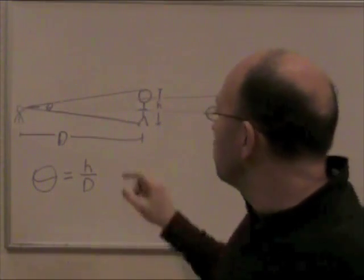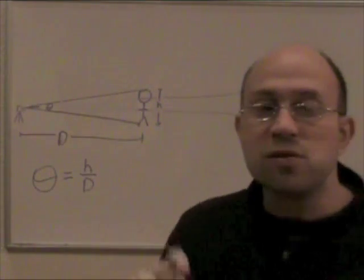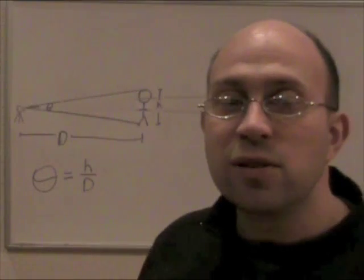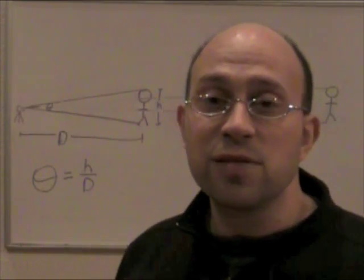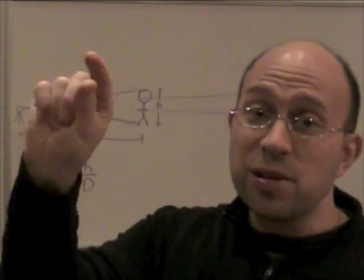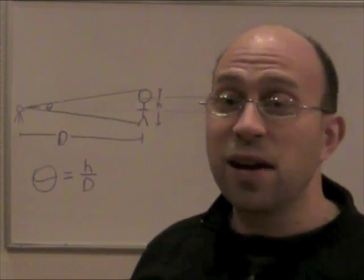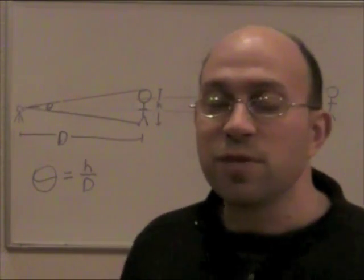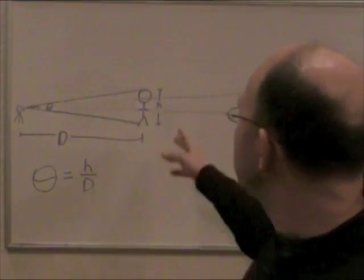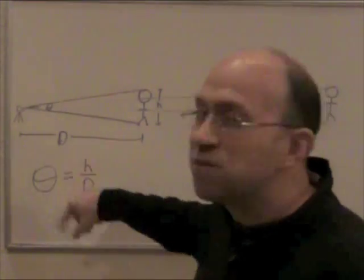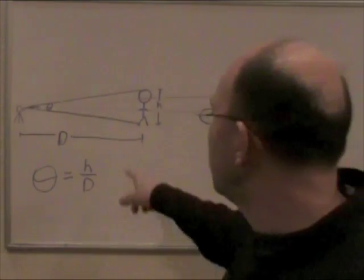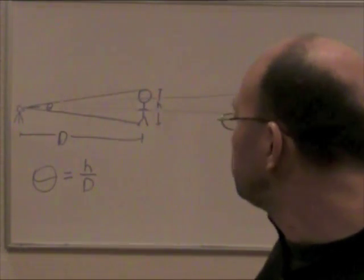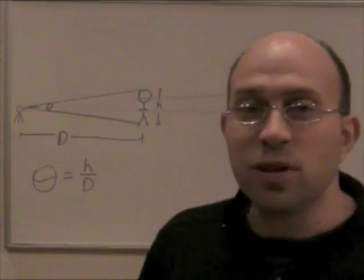So theta is really easy to measure. Just take a picture, you know the field of view of your camera, and you can measure how much of that field of view it takes up. Or even with the naked eye, you can imagine holding a protractor up to the sky to measure that angle theta. So for anything we observe, we can measure theta. The trick is to get either H or D so we can solve this equation to get the other one, whichever one we don't know.